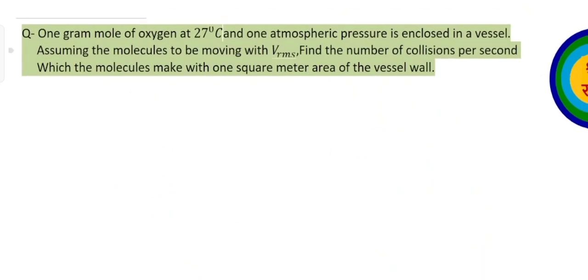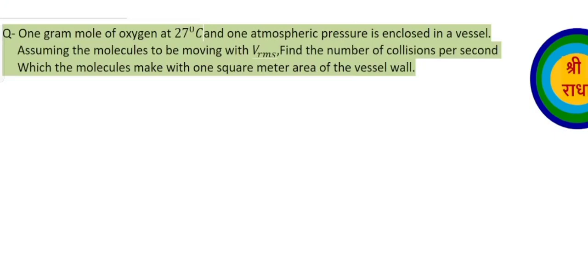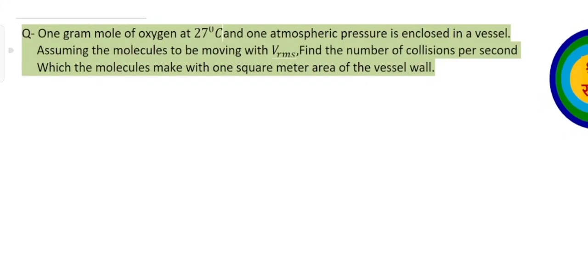1 gram mole of oxygen at 27 degrees Celsius and 1 atmospheric pressure is enclosed in a vessel. Assuming the molecules to be moving with Vrms, find the number of collisions per second which the molecules make with 1 square meter area of the vessel wall.